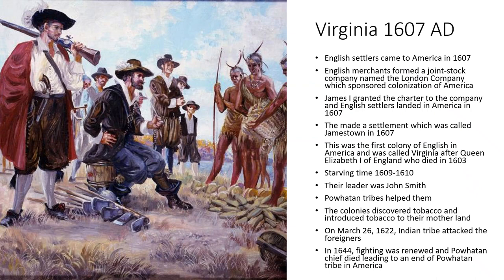Starting with Virginia, the first British colony in America. English merchants formed a joint stock company called the London Company, which sponsored colonization. King James I granted the company a charter, and English settlers landed in America in 1607. They made a settlement called Jamestown, named after King James. From there they expanded, and the colony became known as Virginia.